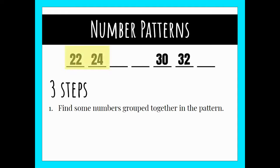I can see already that 22 and 24 are grouped together, and I see that 30 and 32 are right next to each other, or grouped together. Those are patterns that are going to help me solve for the rest of the pattern.